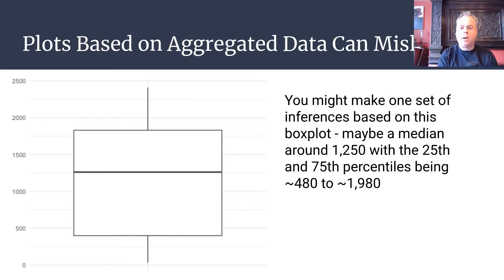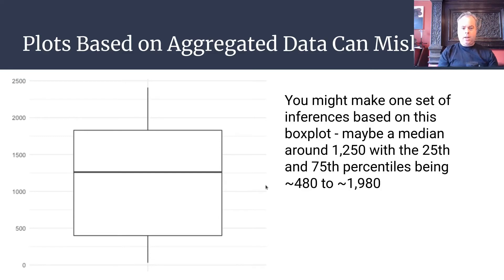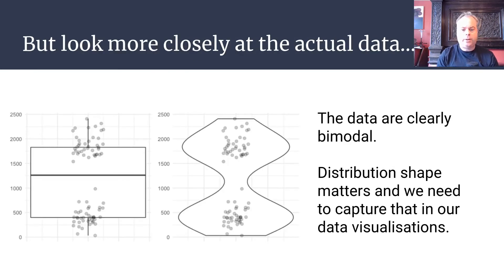Box plots are very widely used. If you were to look at a box plot for a particular data set, it might look something like this. If we've got the median here, we think the median is probably about the 1250 line. The 25th and 75th percentiles for the data are about 480 and 1980. Those are the kinds of inferences that you would make if you saw data presented in this kind of aggregated sense in the box plot sense.